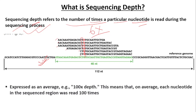Sequencing depth is expressed as an average. For example, 100X depth means that on average, each nucleotide in the sequenced region was read one hundred times.